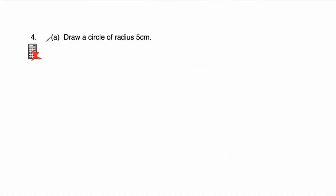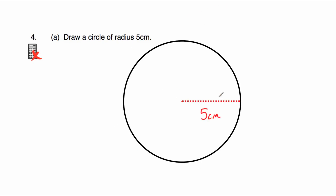Question 4a asks us to draw a circle of radius 5cm. You'll need a ruler, compass, and pencil. Put your pencil in the compass and set it so the distance between the point of the compass and the point of the pencil is exactly 5cm. Put the point of the compass down on the page, set your pencil down 5cm away, and draw a circle. The radius — the distance from the center to a point on the circle — is 5cm.